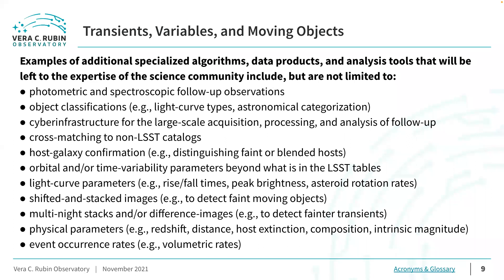Examples of specialized algorithms, data products, and analysis tools that will be left to the expertise of the science community include, but are not limited to: photometric and spectroscopic follow-up observations; object classifications like light curve types or astronomical categorizations; cyber infrastructure for large-scale acquisition, processing, and analysis of follow-up; cross-matching to non-LSST catalogs; host galaxy confirmations such as distinguishing faint or blended hosts; orbital and/or time variability parameters beyond what is in the LSST tables; light curve parameters such as rise and fall times, peak brightness, or asteroid rotation rates; shifted and stacked images to detect faint moving objects; multi-night stacks or difference images to detect fainter objects; and physical parameters like distance, host extinction, composition, intrinsic magnitude, and event occurrence rates.